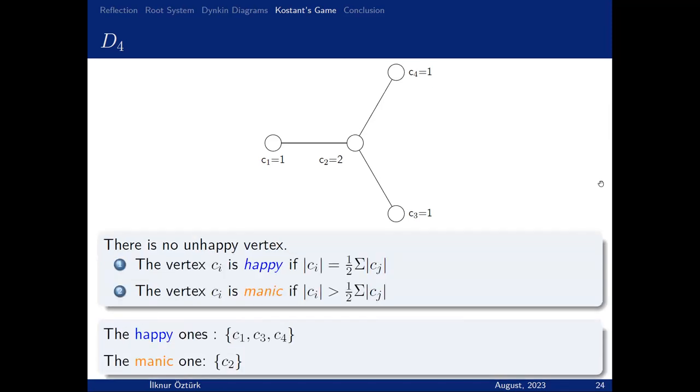Now there's no problem—there's no unhappy vertex. But if they're not unhappy, what are they? We say if the label of a vertex equals half the sum of their neighbors, we say it's happy. If it's greater, we say it's manic. In this case, the happy ones are C1, C3, and C4. And the manic one is C2.